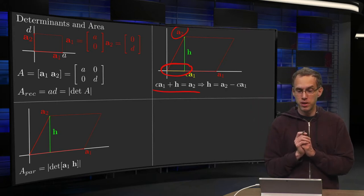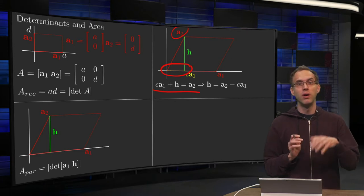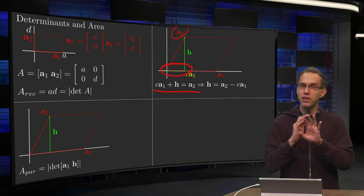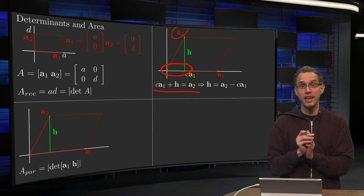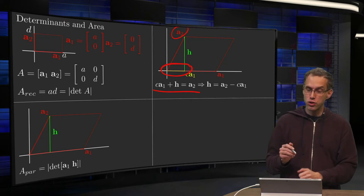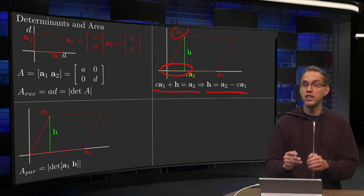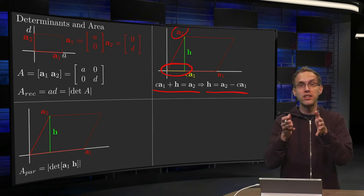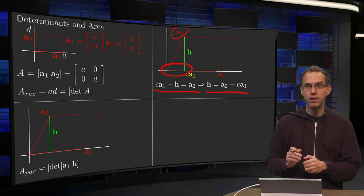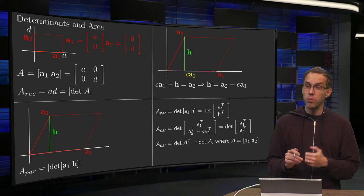So there we go: c times a₁ plus h equals vector a₂. I don't know what c is exactly—doesn't matter as long as you have such a relation. Now we can solve for h: h equals vector a₂ minus c times a₁.